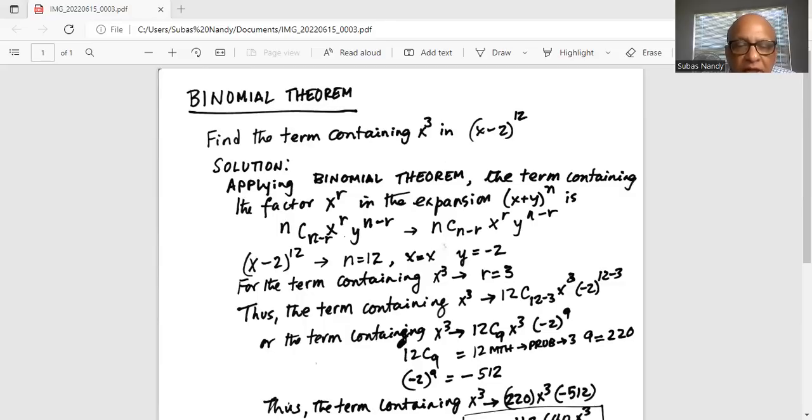For the term containing x cubed, r equals 3. Thus the term containing x^3 is 12C(12-3), which is 12C9, times x^3 times (-2) raised to the power of (12-3).